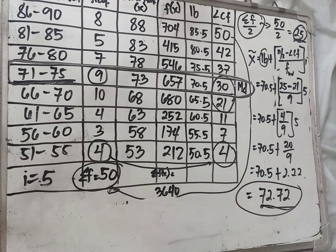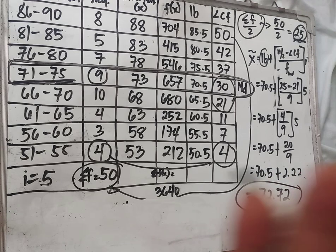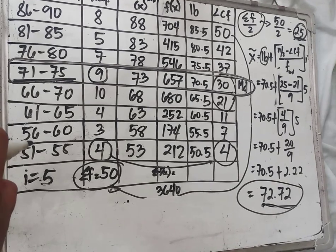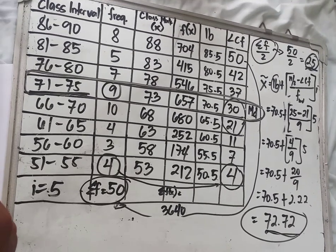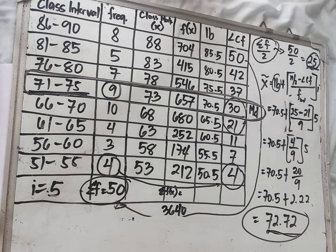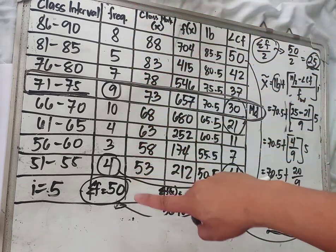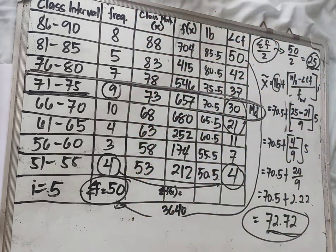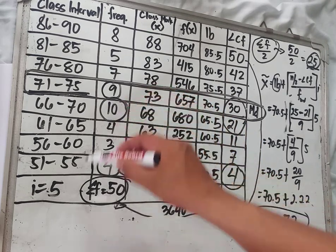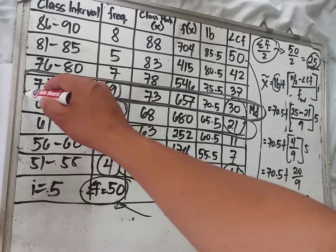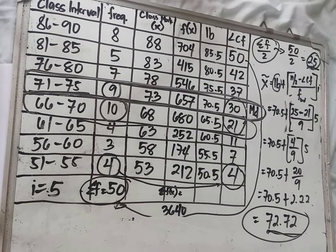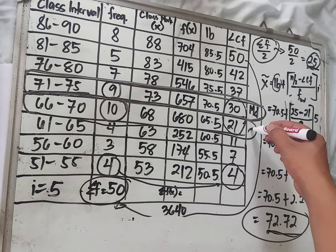To find the mode from grouped data, the modal class is the class with the highest frequency. Based on the given frequencies, the highest frequency is 10, so that is the modal class. The lower boundary of the modal class is found from that class interval.